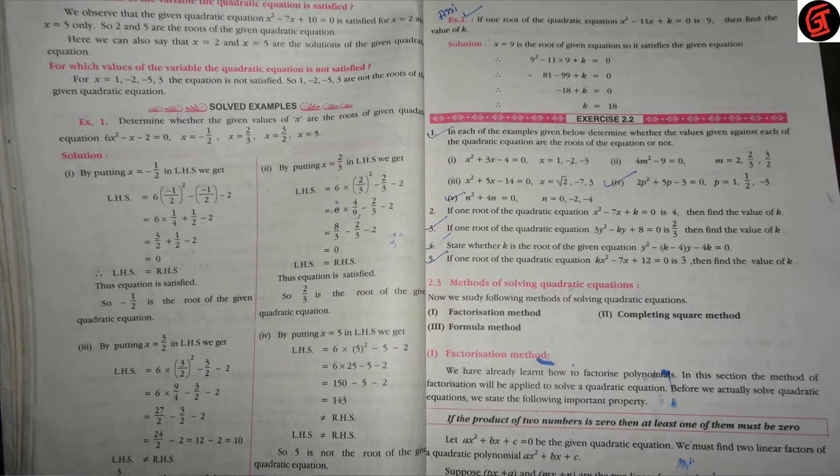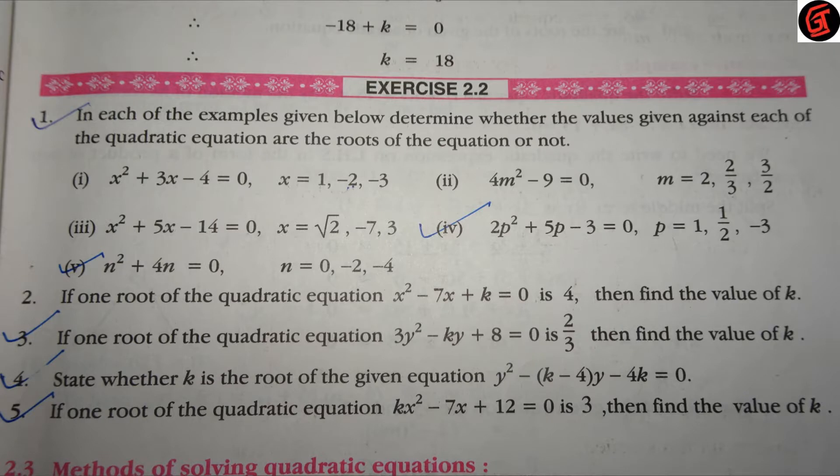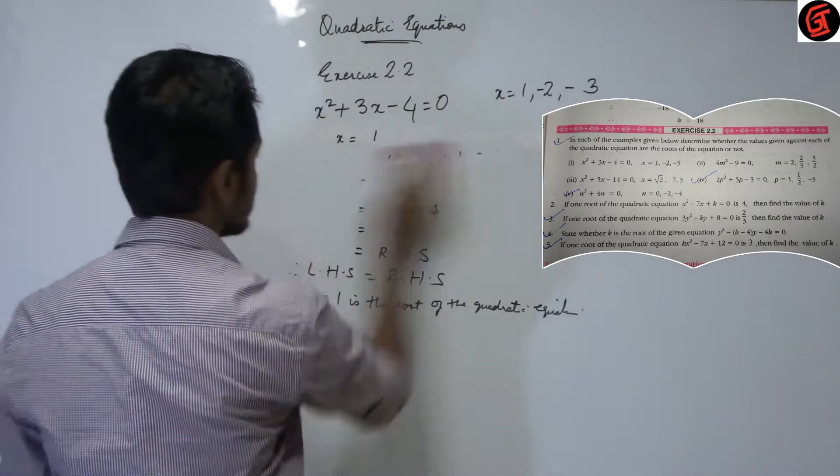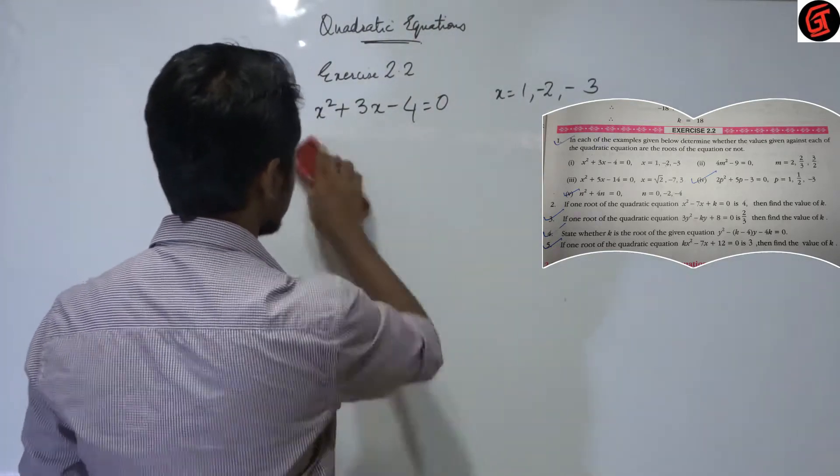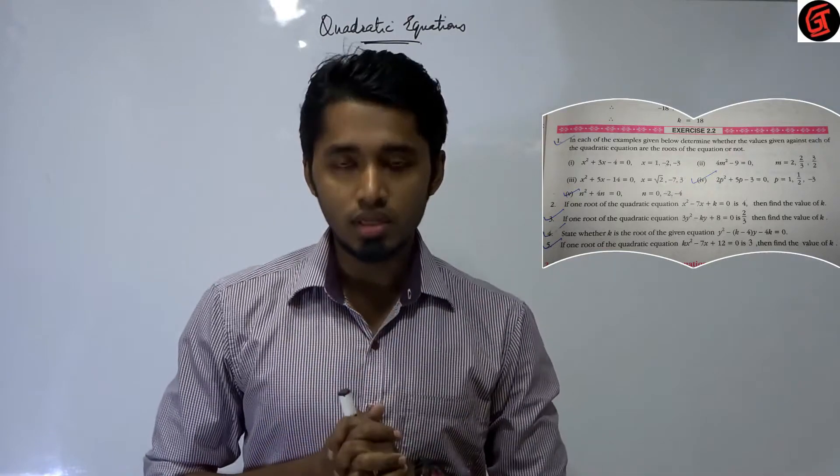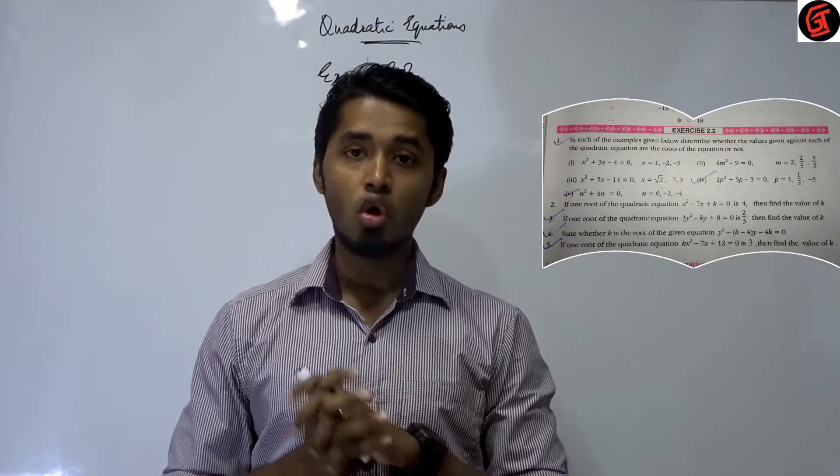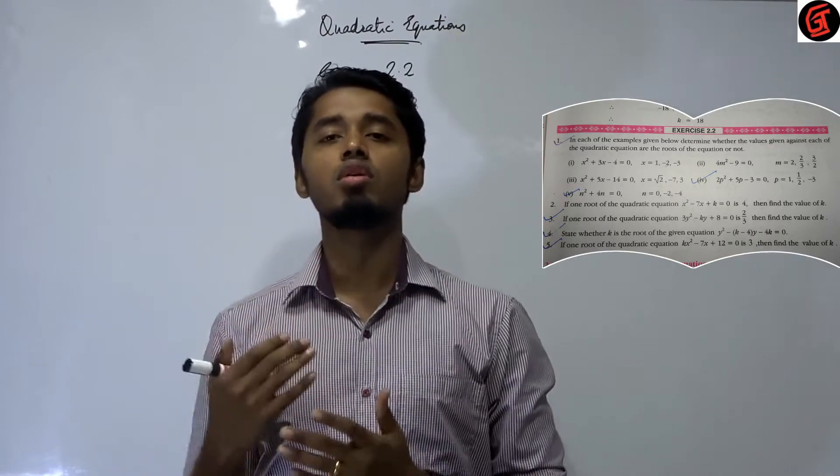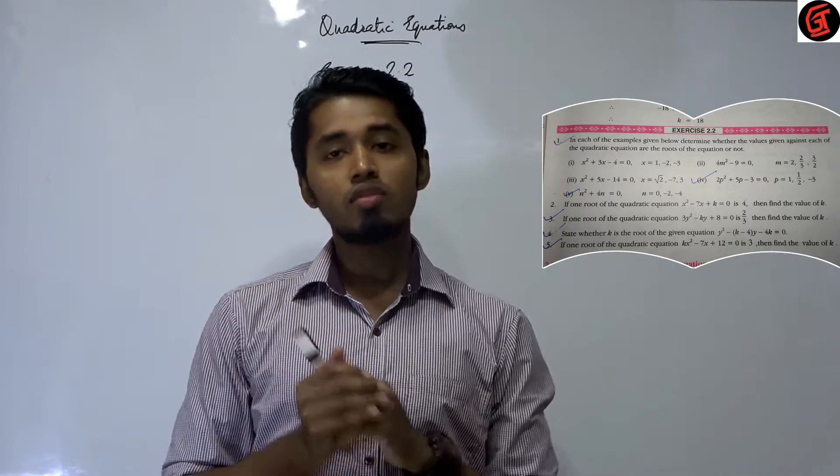In each of the examples given below, determine whether the values given against each of the quadratic equation are the roots of the equation or not. There are certain values given of the variables. We have to find out if those values are roots of the quadratic equation or not.